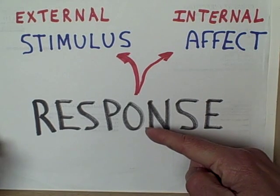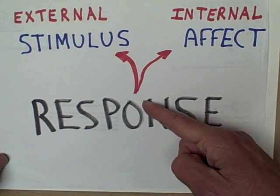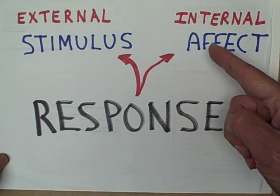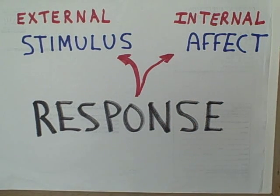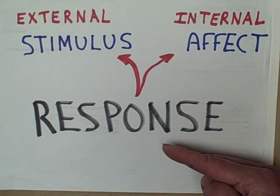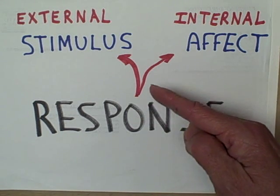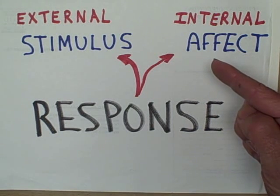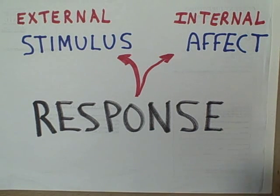On the other hand, we might take a look at some kind of internal inference. What's going on inside of the organism? What kind of emotion took place? For example, if we observe the response of crying, we might infer that the internal affect was one of sadness.